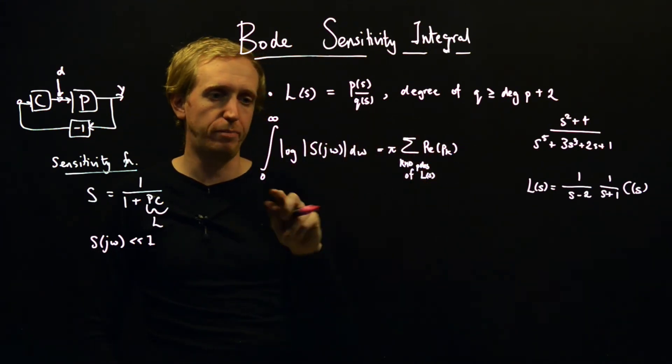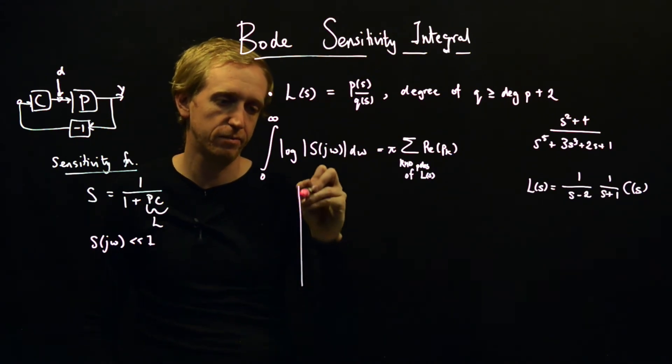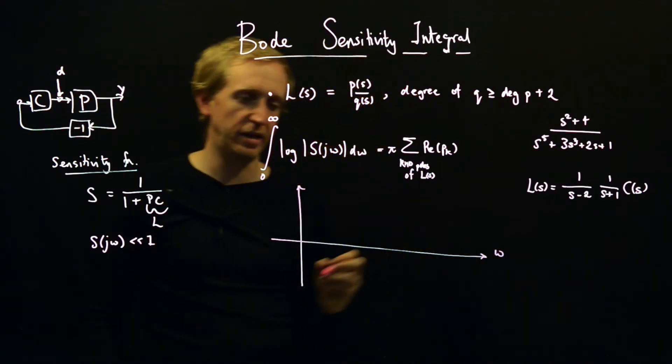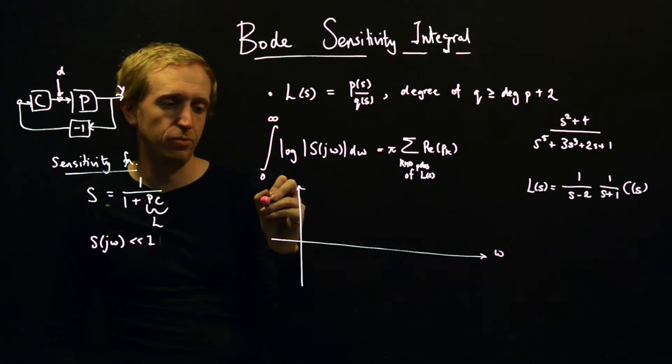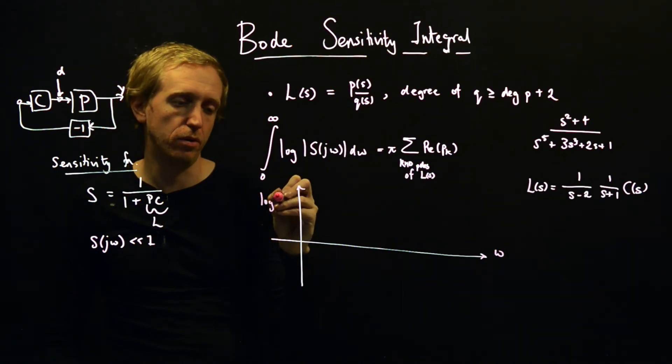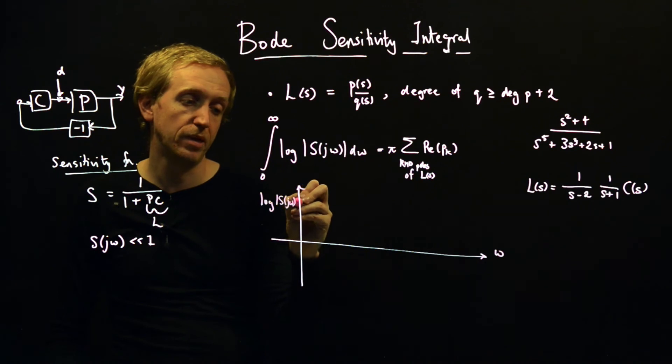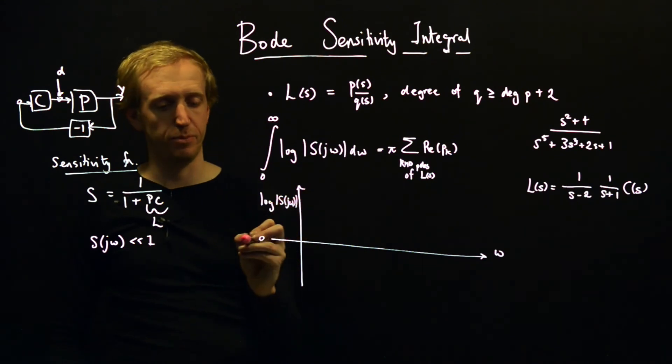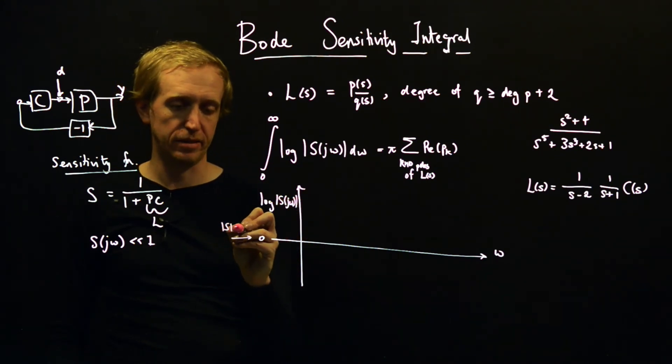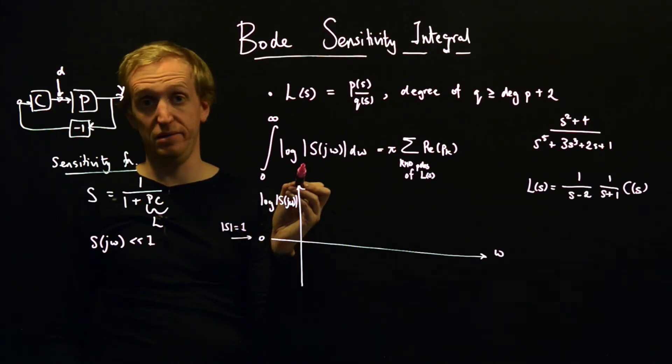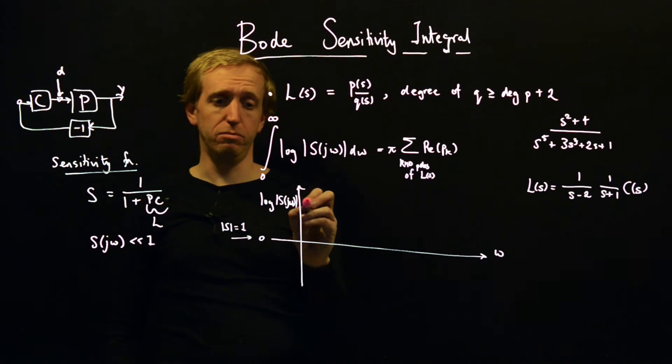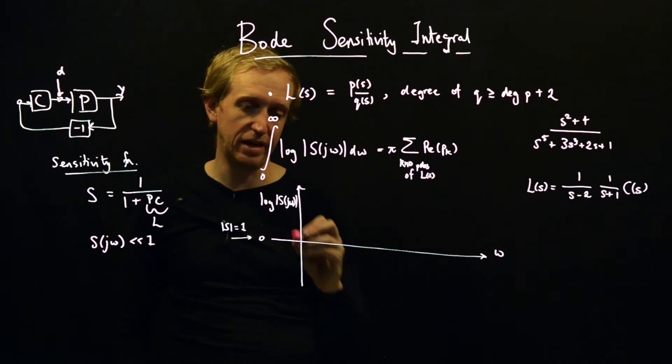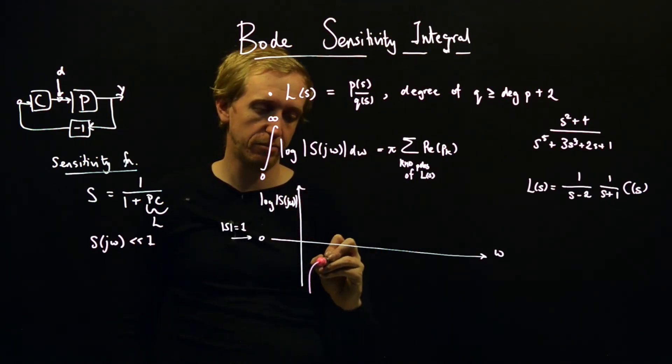So let's just try and draw a picture and understand what this tells us. Here, on the x-axis we have frequency, and on the y-axis we're going to have the log of the size of the sensitivity function. And this is values of zero. And so what values of s does this correspond to? This corresponds to s is equal to 1, so log of one is zero.